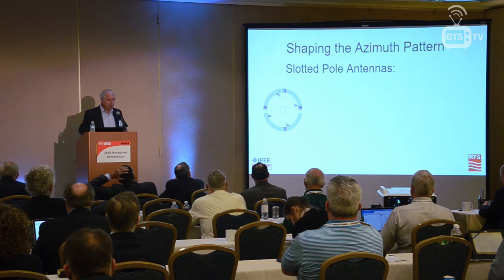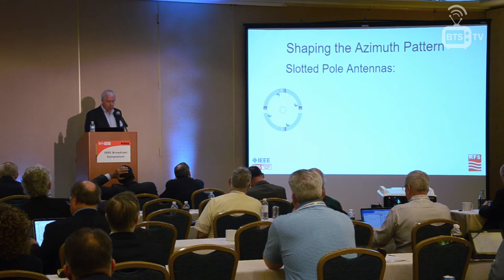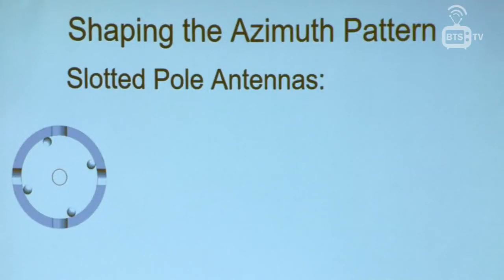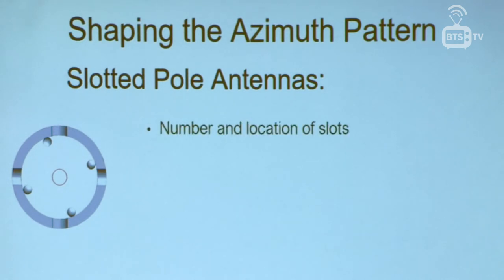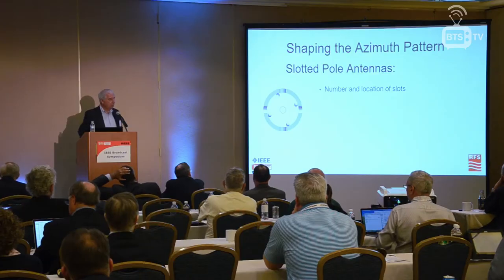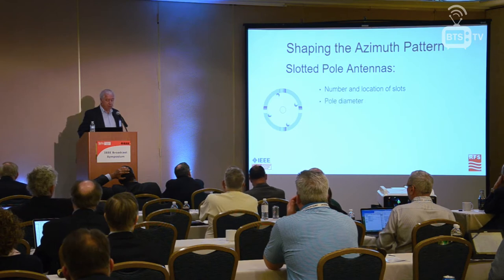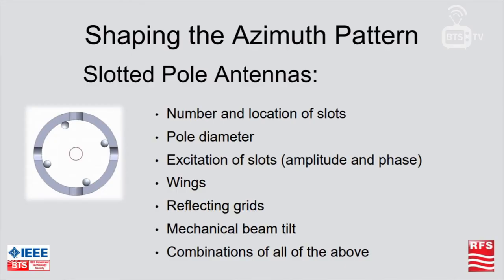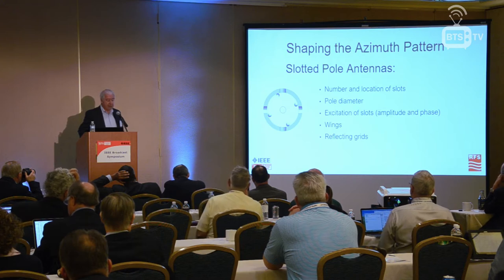I'll talk about slotted pole antennas. A slot antenna is a pole — normally steel, could be aluminum — with an inner conductor running up the middle and couplers taking energy from the inner conductor and exciting the field across the slots. To shape the pattern, the key parameters are: the number of slots in the pole, the diameter of the pole, how you excite the slots by changing amplitude and phase, adding bending wings to the pole, and adding reflecting grids behind the antenna to give a cardioid pattern.